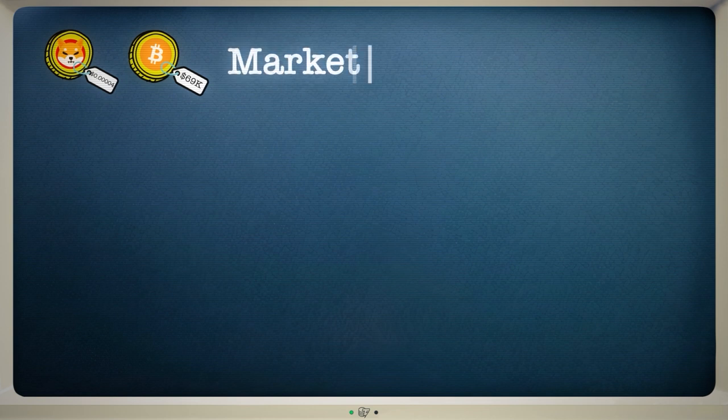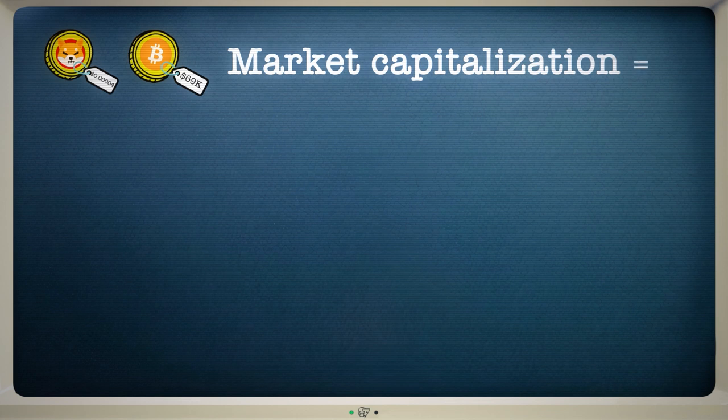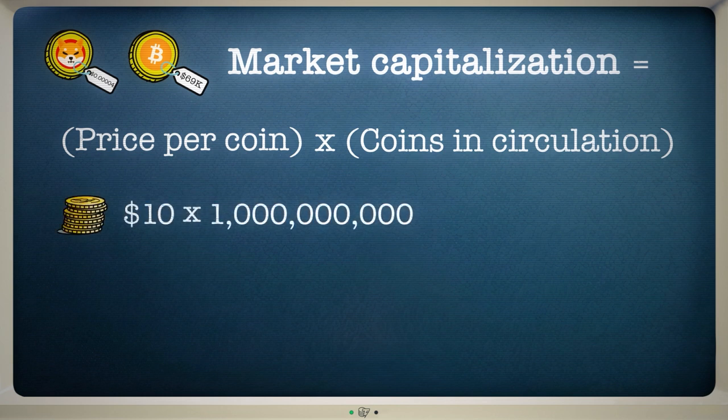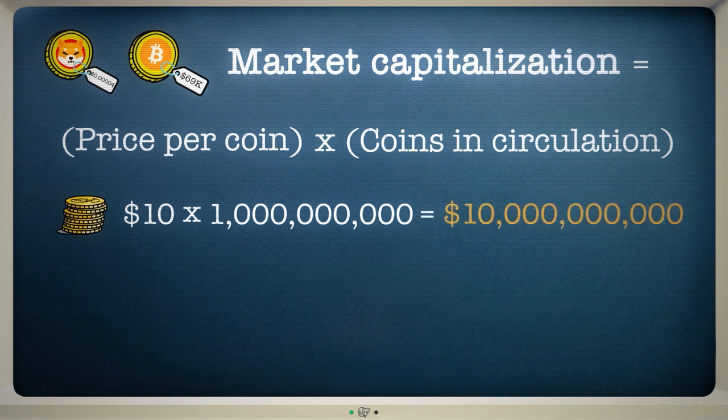There are some important facts you need to find out too. First, there's the market capitalization. And you can calculate this by multiplying a cryptocurrency's price by the number of coins in circulation. If a cryptocurrency is worth $10 and has 1 billion coins in circulation, its market cap will be $10 billion.